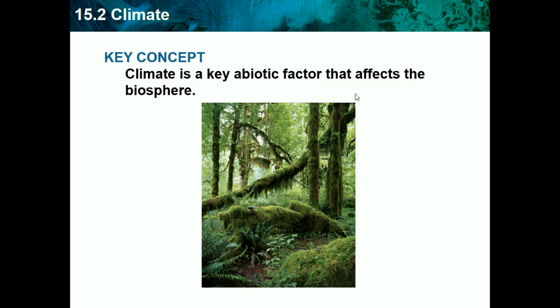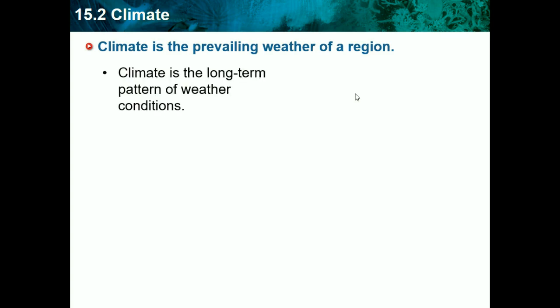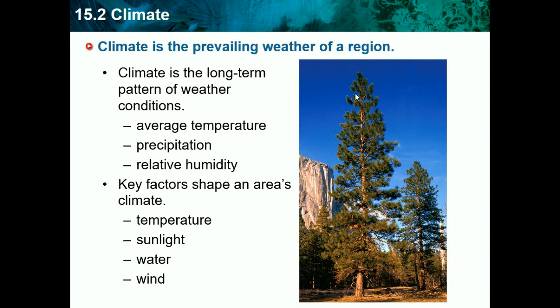So 15.2 is climate. Climate is a key abiotic factor that affects the biosphere. Climate is basically the weather of an area that persists over a long time — it's the prevailing weather of a region. It's not just one day, like whether it rained yesterday. Climate is a long-term pattern of weather conditions, including average temperature, precipitation, and relative humidity. Key factors shaping an area's climate are temperature, sunlight, water, and wind.